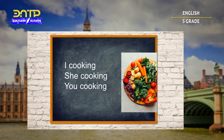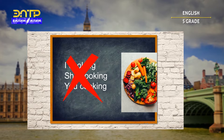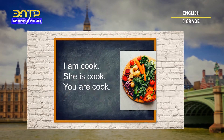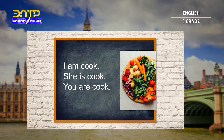Where is the verb to be? It's incorrect. I am cooking. She is cooking. You are cooking. Where is -ing? This is incorrect as well.